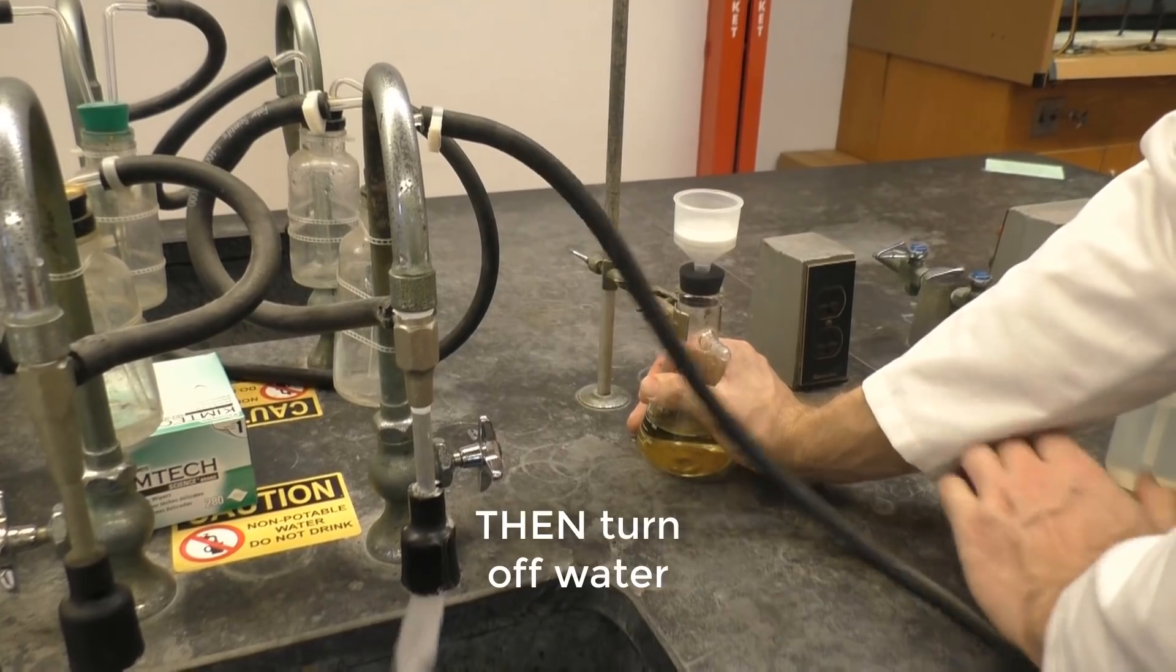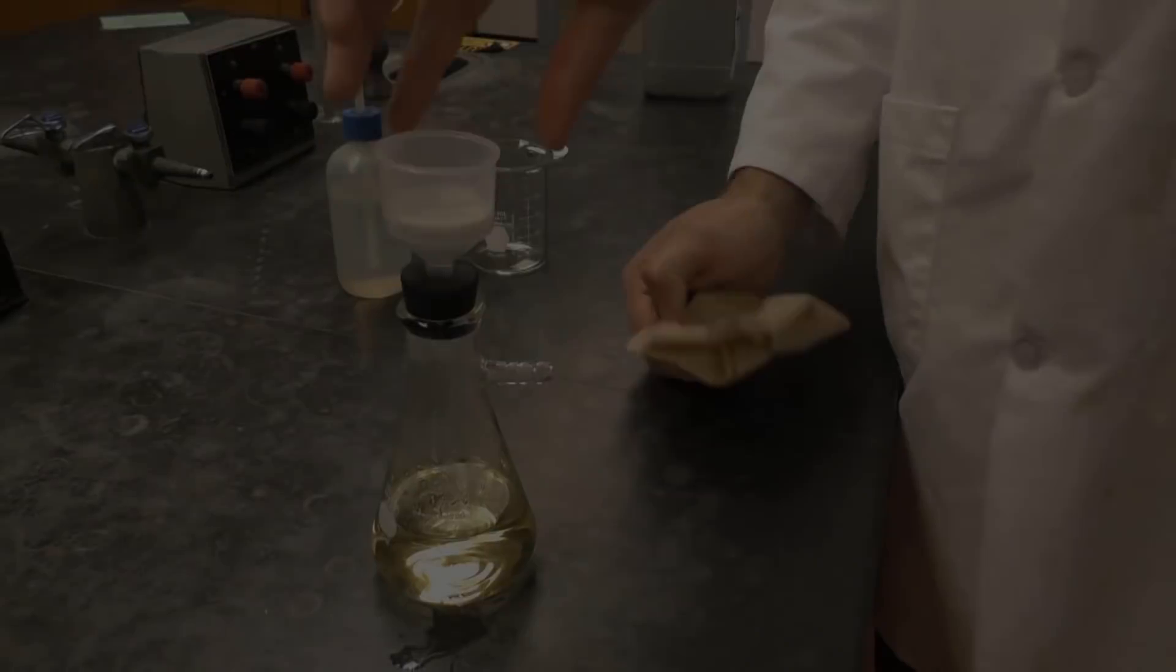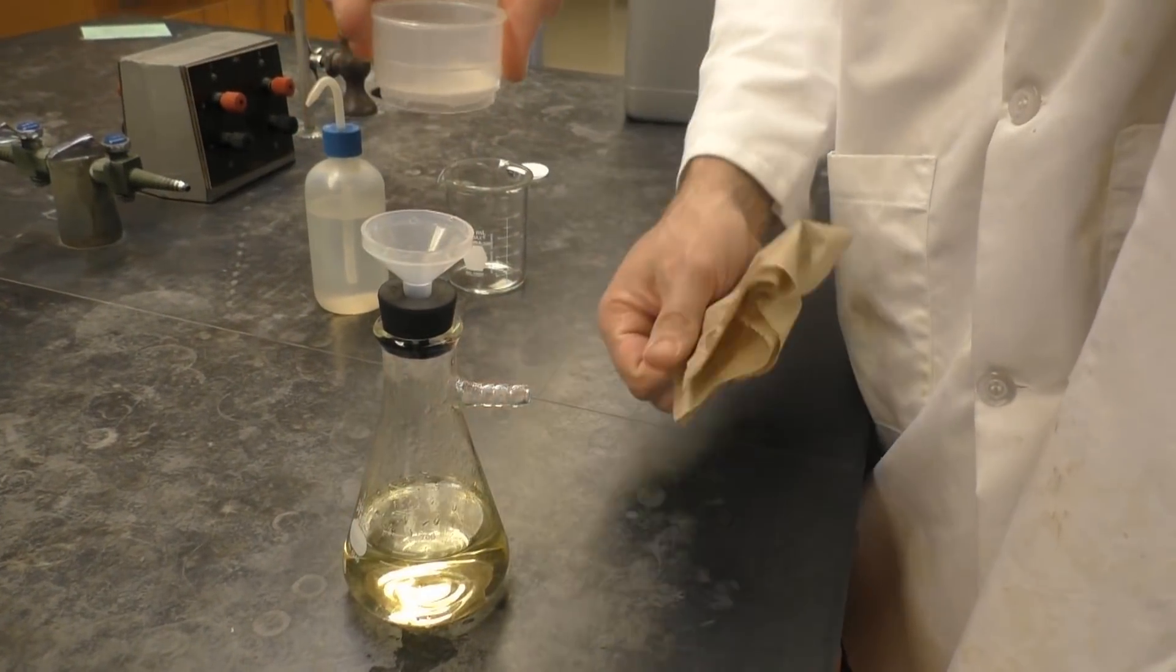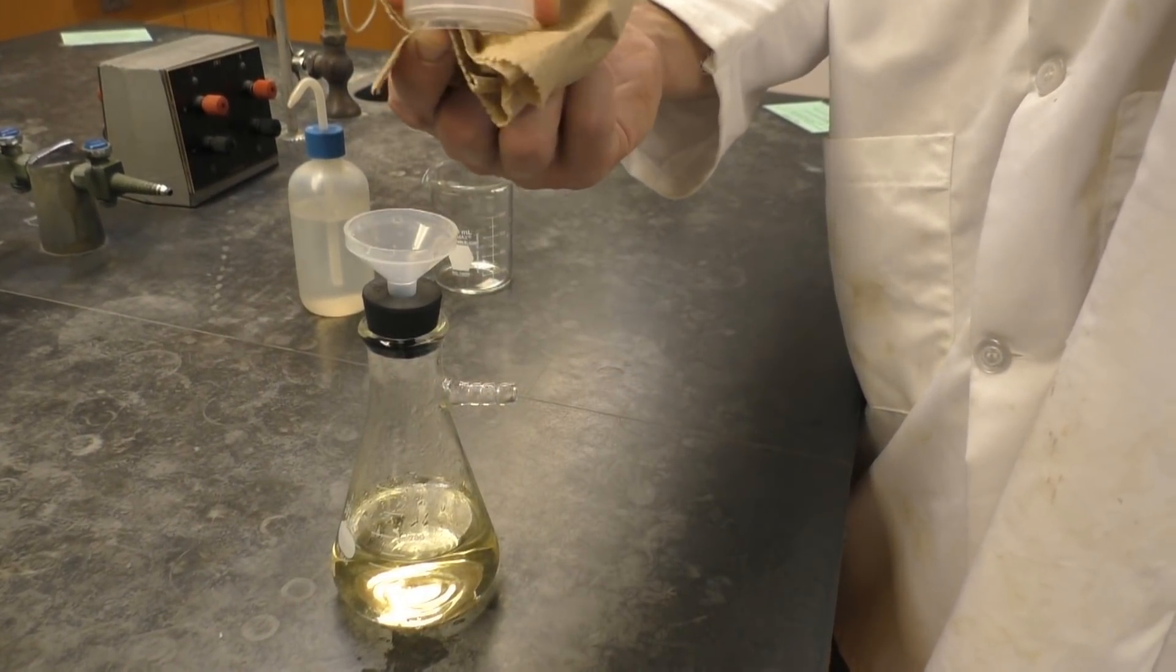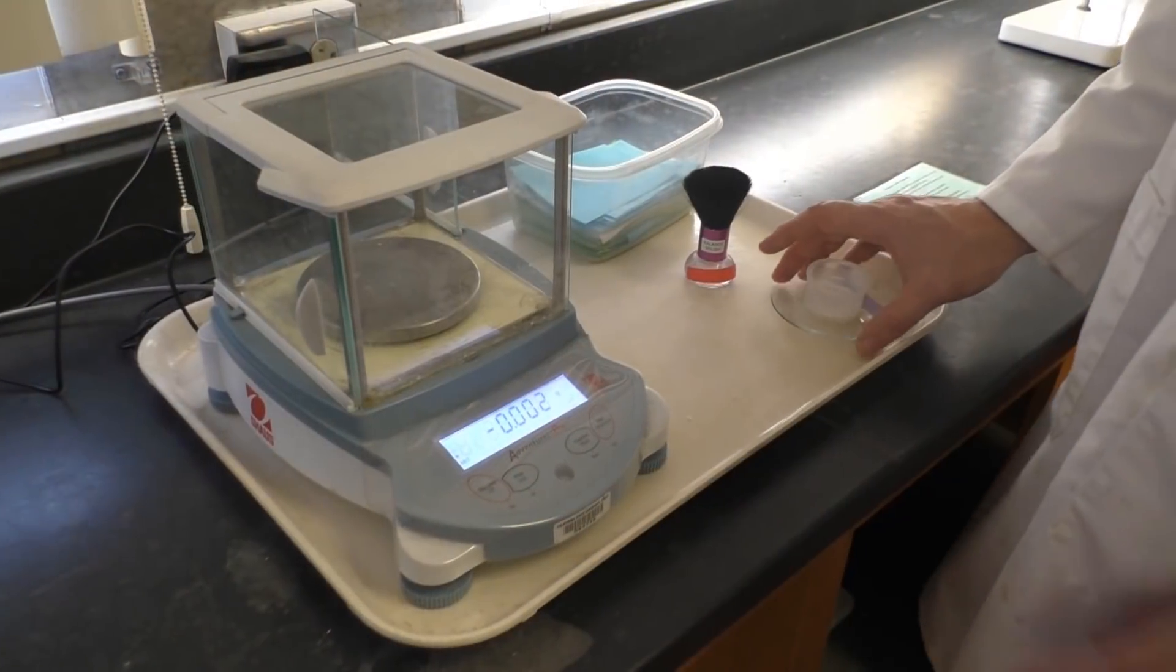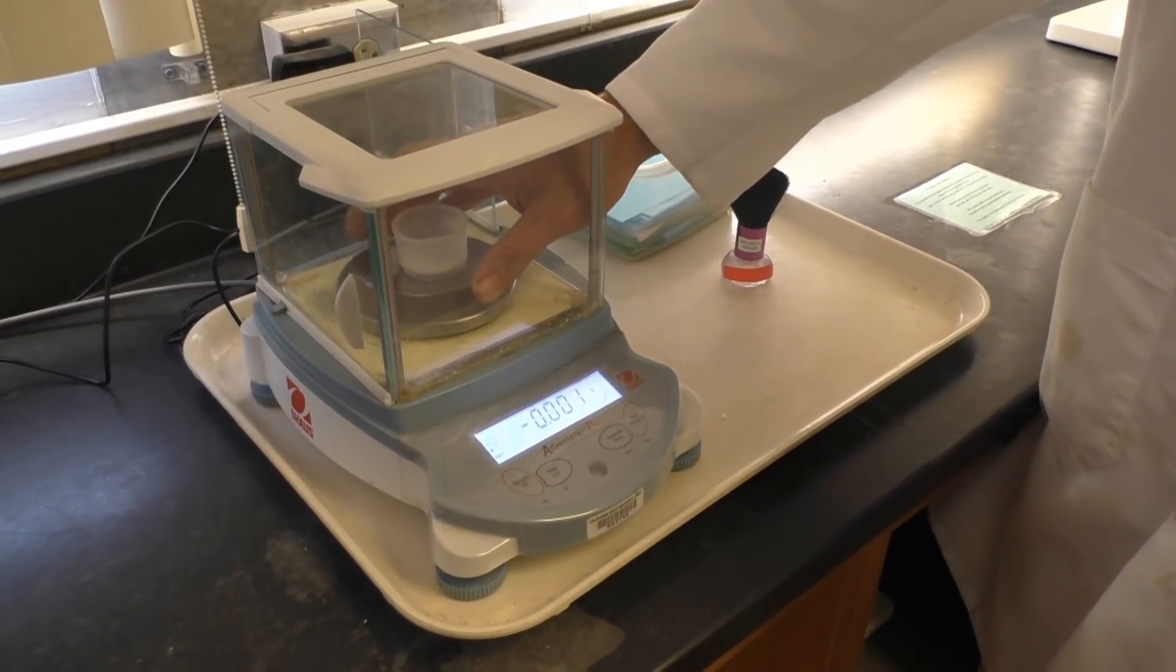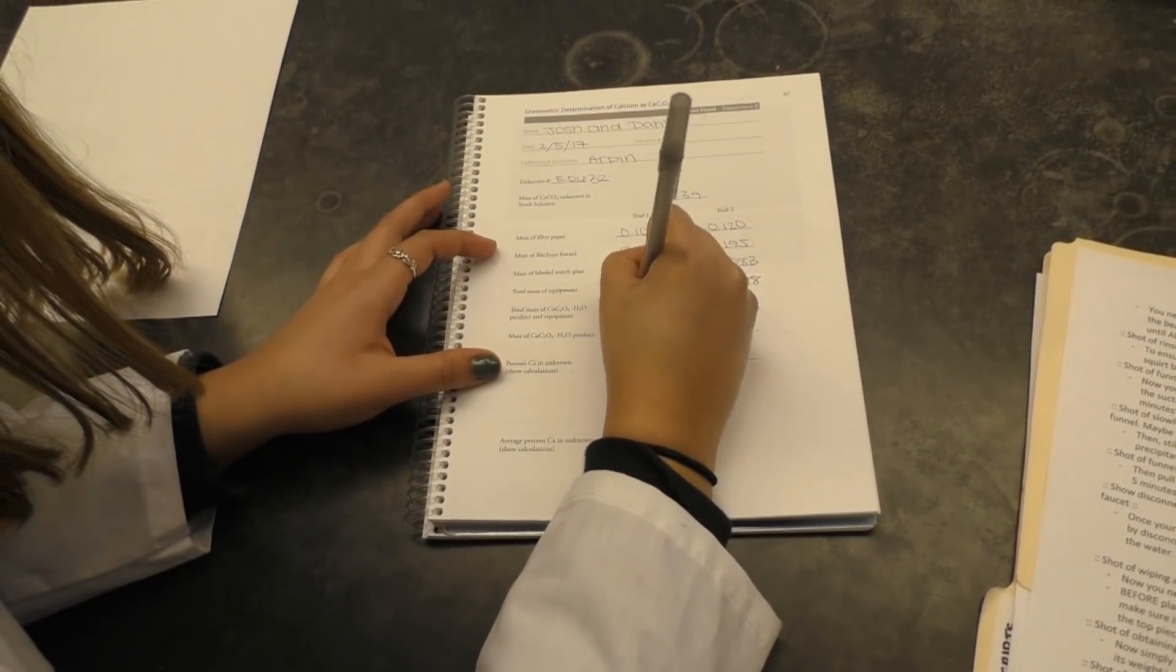Once your desired precipitate is completely dry, stop vacuum filtration by disconnecting the tubing to your sidearm first and then turning off the water. Before placing your Buchner funnel on the scale to get a mass, you need to make sure that it's completely dry. Disconnect the top piece and wipe it with a paper towel. Now simply obtain the mass of your equipment post filtration and record its weight in your notebook.